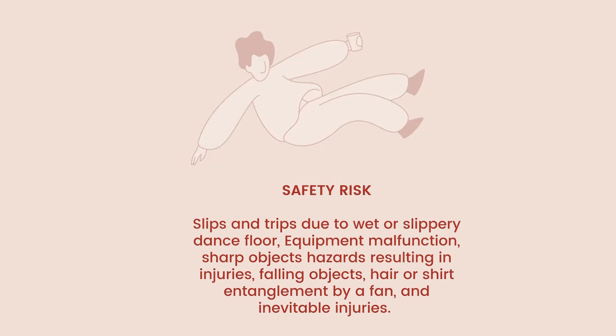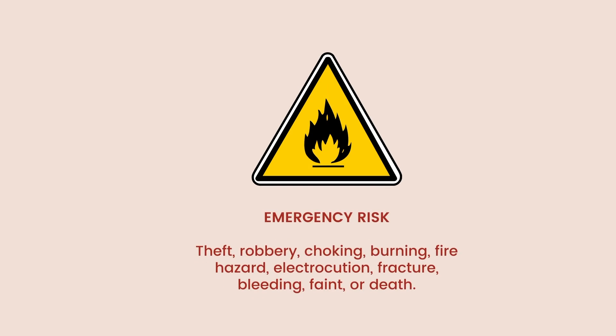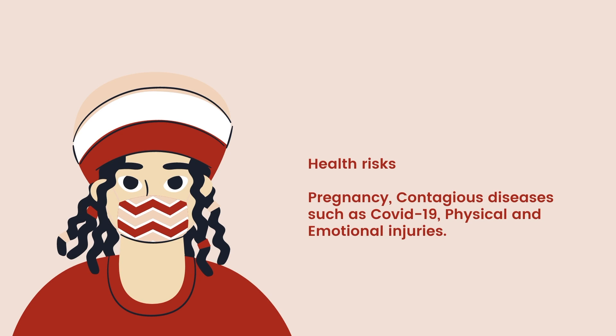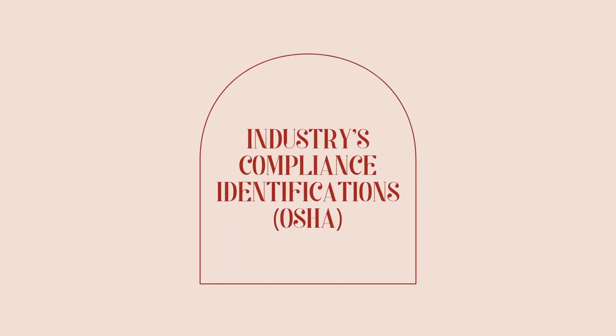The second division is emergencies such as theft, robbery, choking, burning, fire hazards, electrocution or electric shock, fracture, bleeding, faint or death. Next is health risks such as pregnancy, contagious diseases such as COVID-19, and physical and emotional injuries. The above mentioned are the risks and hazards identified which are possible to cause harm to either employees, employers or outsiders. So in order to avoid these risks and hazards from happening, we have developed a few safety plans to address these issues and prevent them from happening in the future.